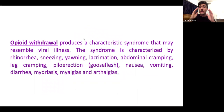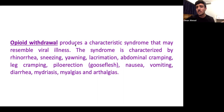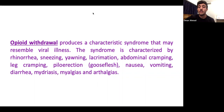Pentazocine key points: it is a kappa agonist and mu blocker; it causes dysphoria — which is associated with kappa, not mu receptors; and at high doses it increases blood pressure and heart rate. So if a patient gets dysphoria plus elevated BP and HR from an opioid, think pentazocine.